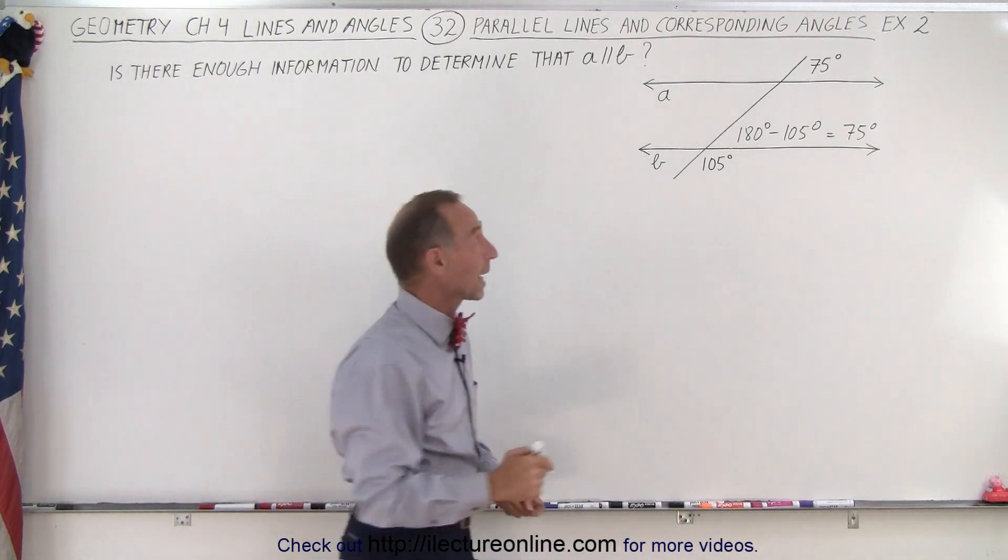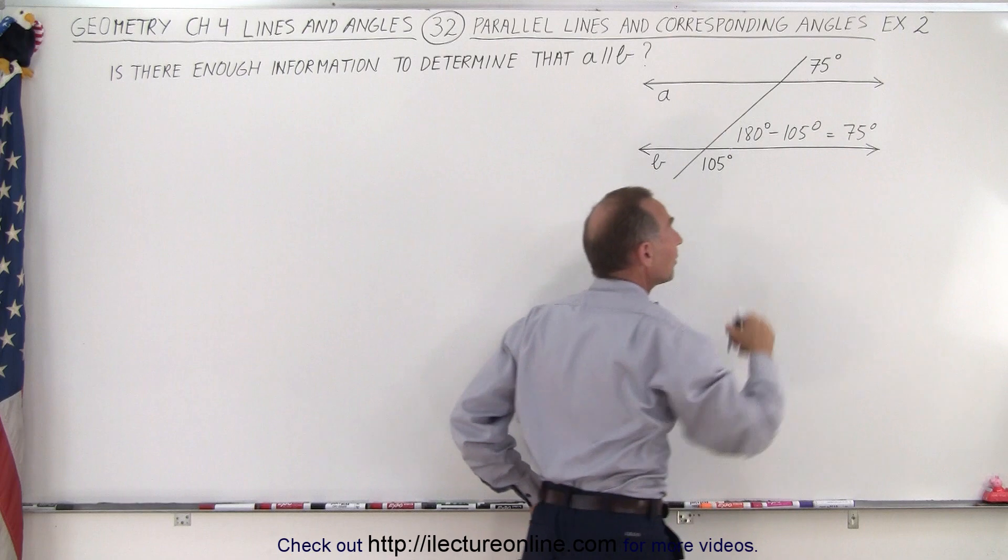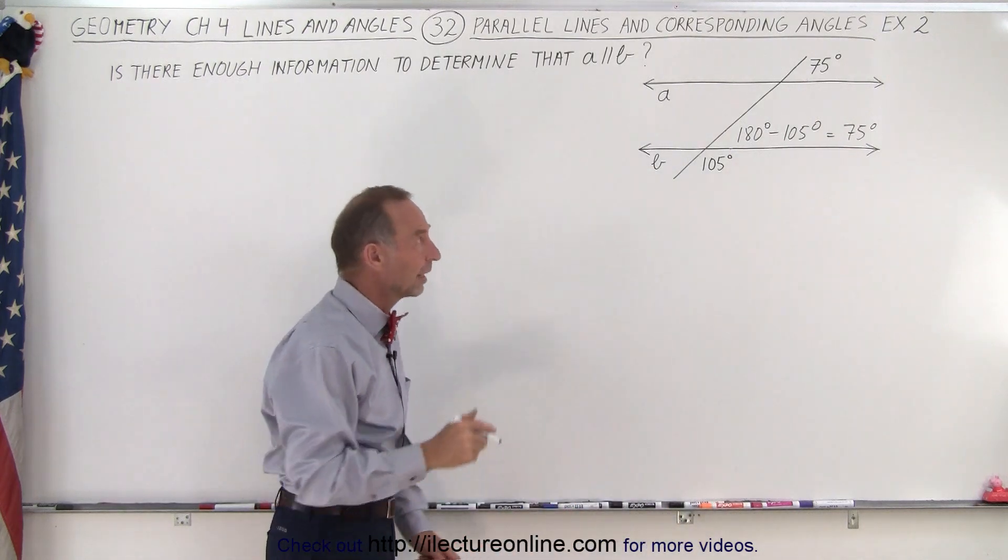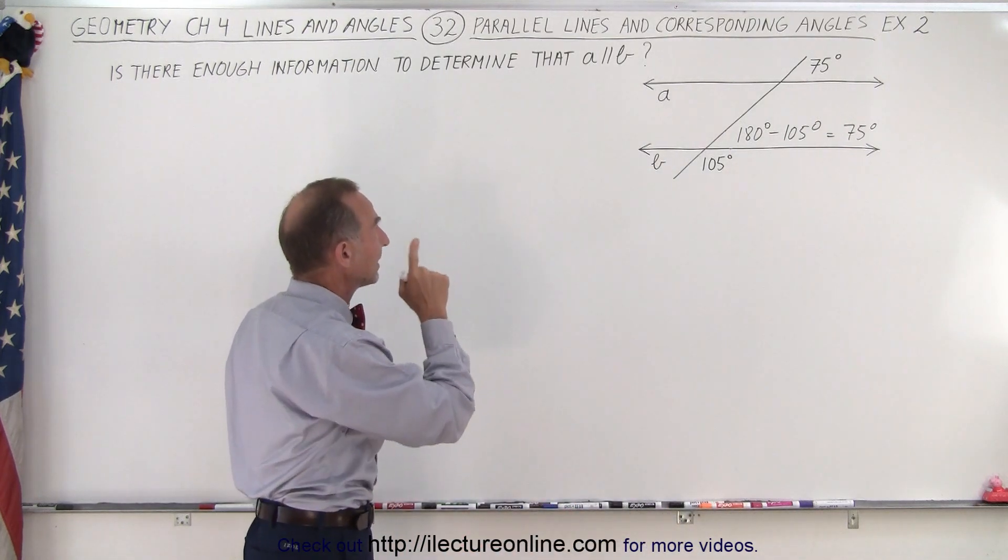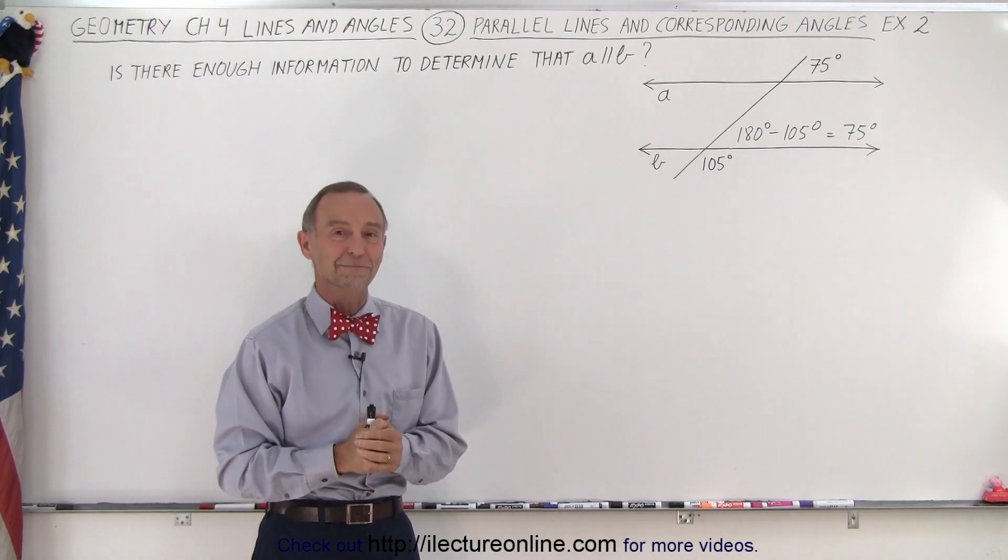And now we can see that the two corresponding angles, this angle right here and this angle right here, are congruent. They do have the same angle measure, and therefore we can conclude that yes, lines A and B are indeed parallel. And that is how it's done.